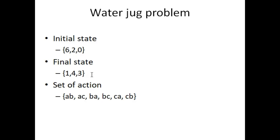So this is the initial state, this is our final state, and this is very important: this set of actions. So I have six actions and I write all of these actions in the form of a set. So look at this, what is the meaning of AB? AB means we can move the water from jug A to jug B.